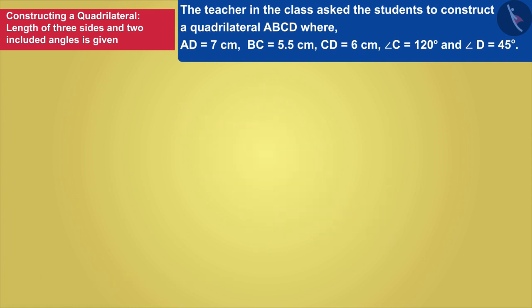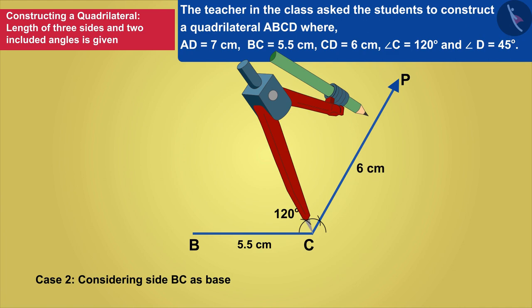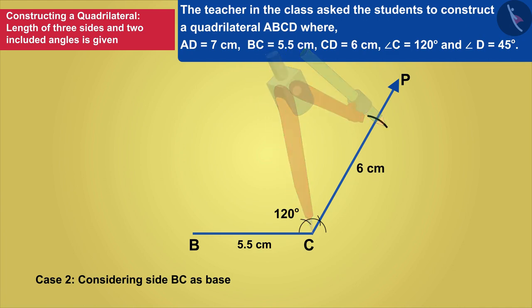In the second case, we can take BC as the base and construct angle C. Draw an arc with C at the center, 6 cm radius, which will intersect at point D.